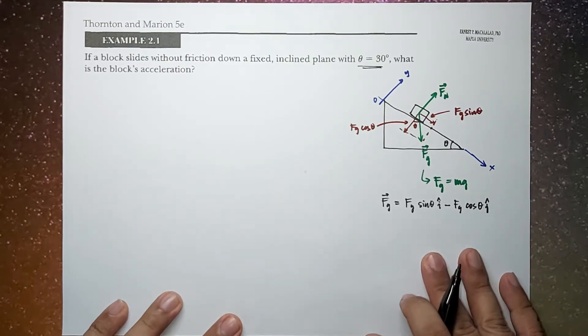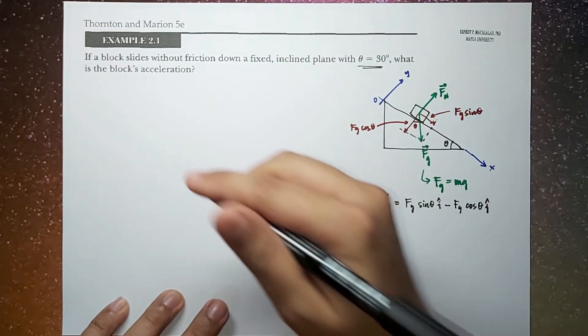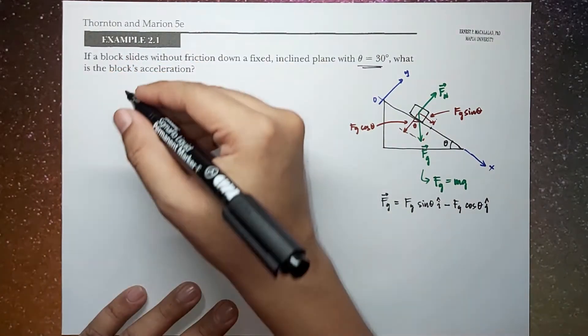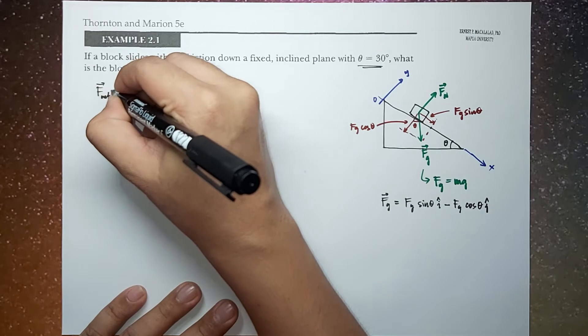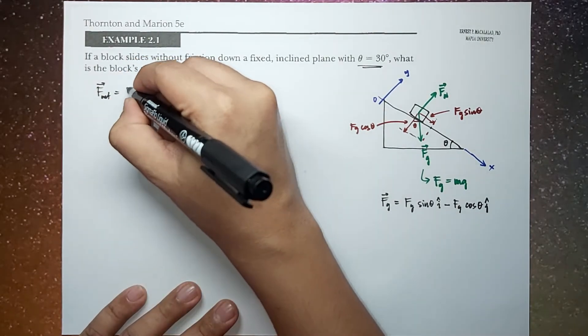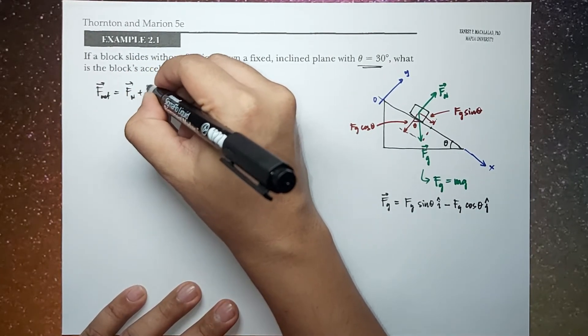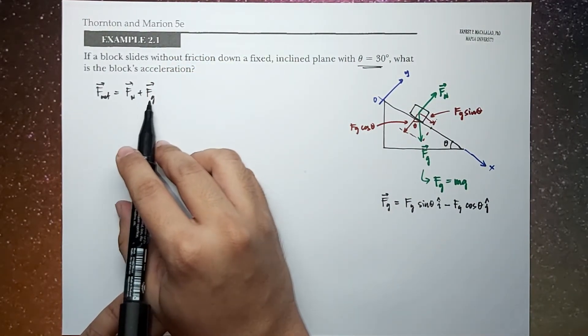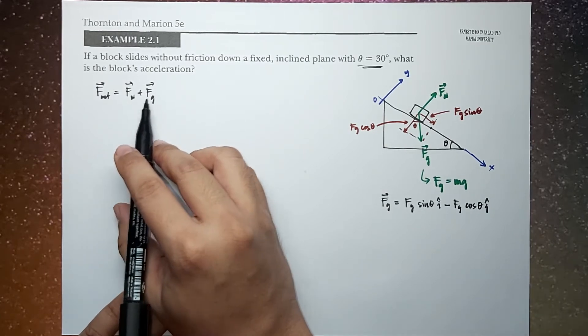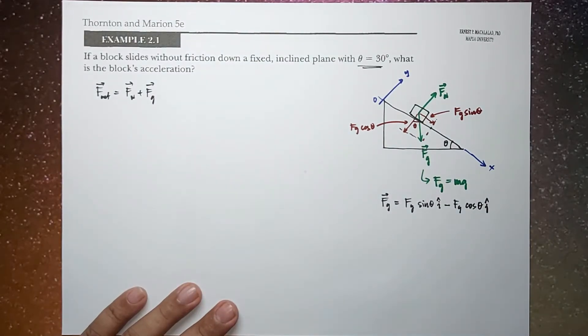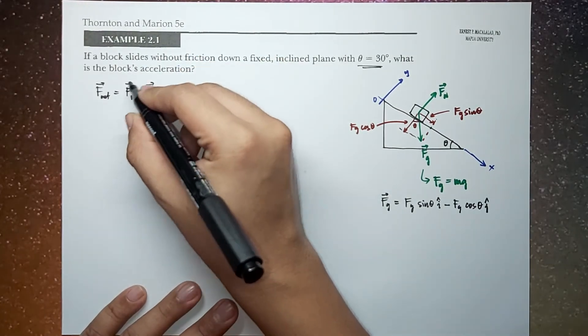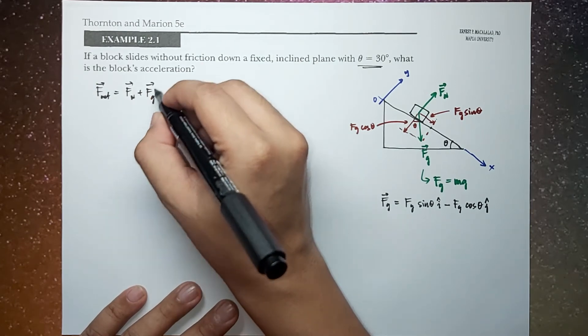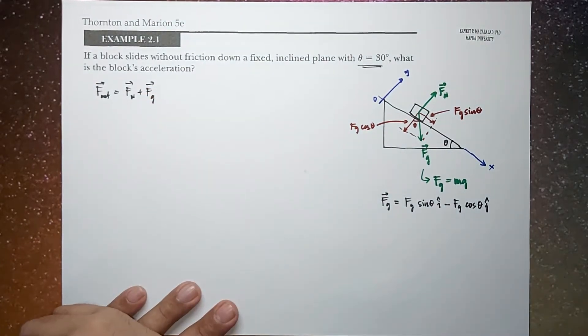So therefore, from this equation, from this setup, we can now define or set our equation of motion, wherein the net force will now be equal to the sum of the normal force and the gravitational force. So take note again that this indicates that the addition is vector in nature. So this is the resultant of the forces acting on the object.